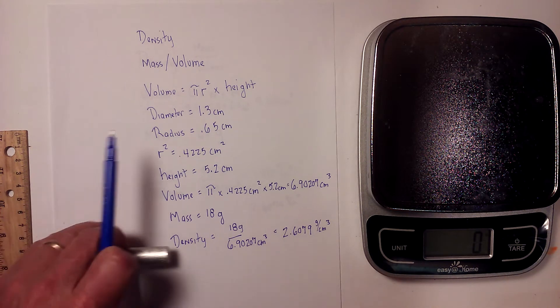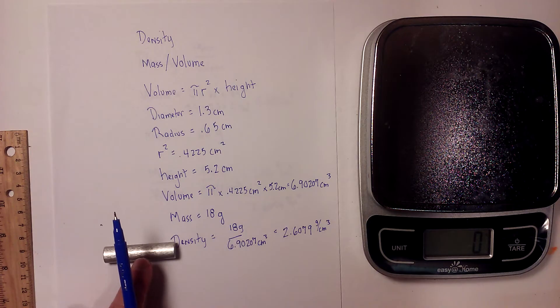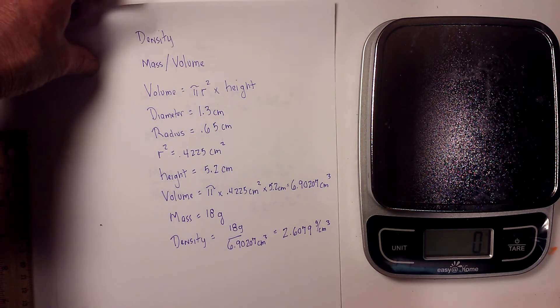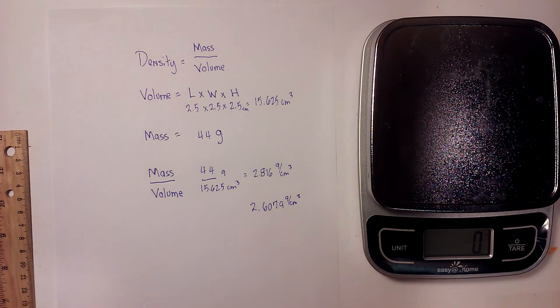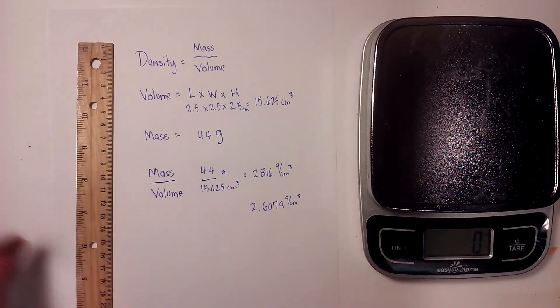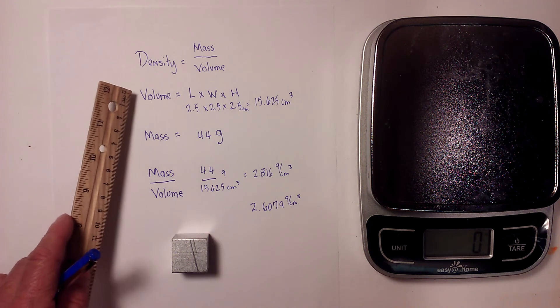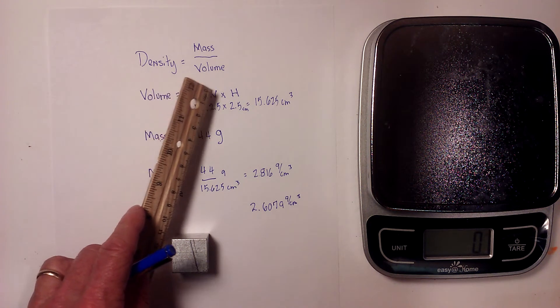Okay, that is the density of this aluminum cylinder. Now let's get the density of the aluminum cube, again just using a ruler. The formula for volume is length times width times height.